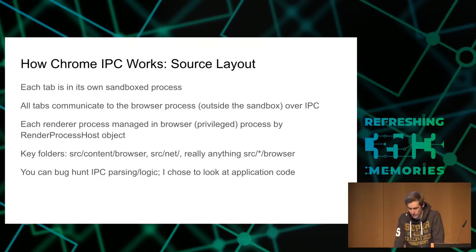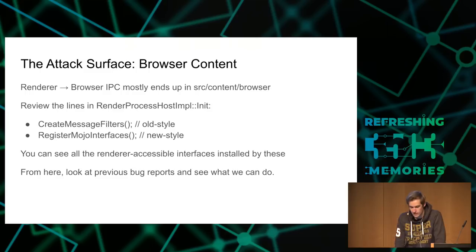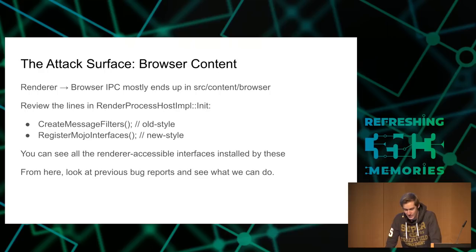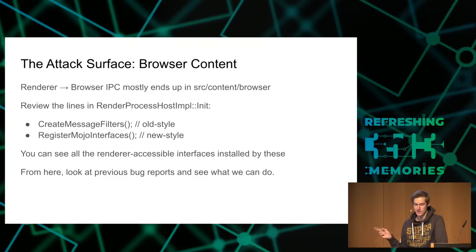In the content stuff, you want to see where the APIs reachable from the renderer are enumerated, and those are in this render process host impl init function. Basically there are two places where APIs are set up or interfaces are exposed — create message filters and register Mojo interfaces. It took me a while to realize where these were, like a year or something, but those are the key functions to look at.